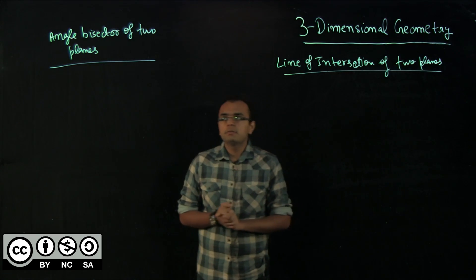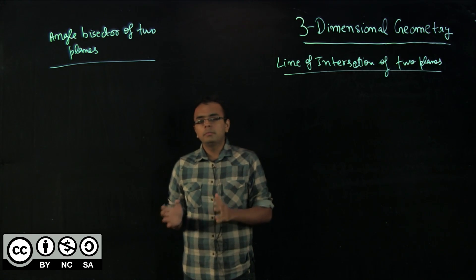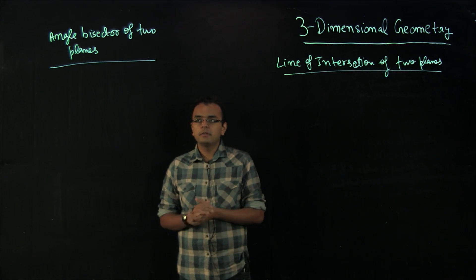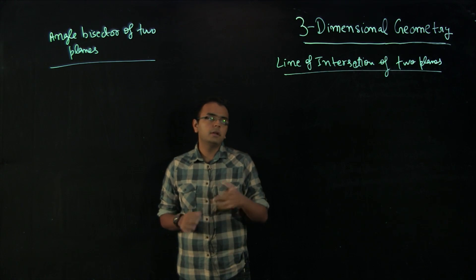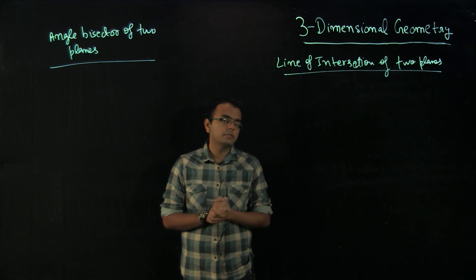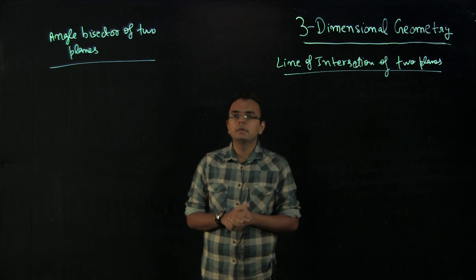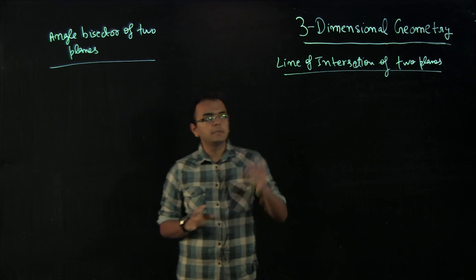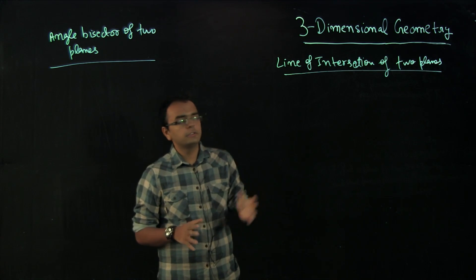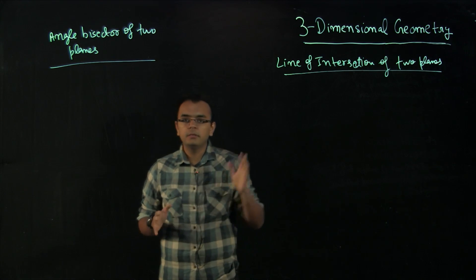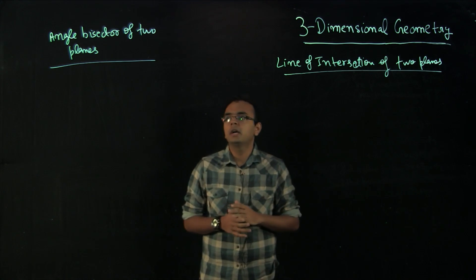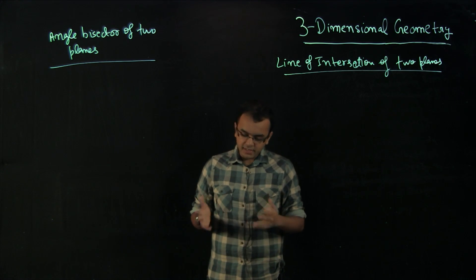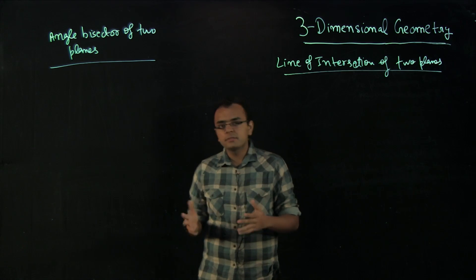In this video for 3D geometry, we will be talking about two topics: the angle bisector of two planes and the line of intersection of two planes. Both topics are important, especially the line of intersection of two planes, and I will be spending some time on that. Angle bisector of two planes is a very easy topic.